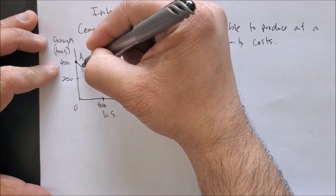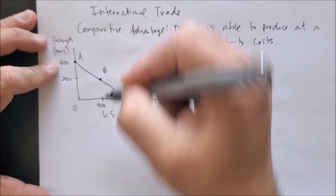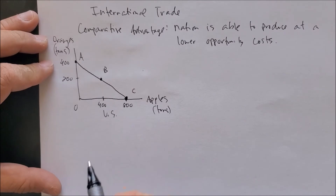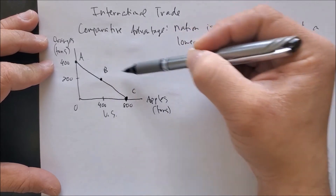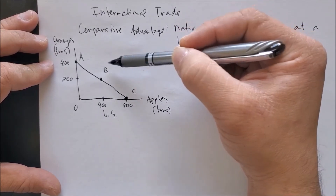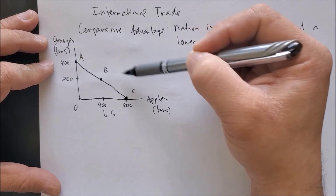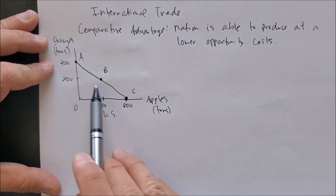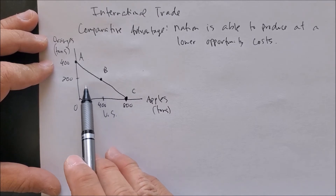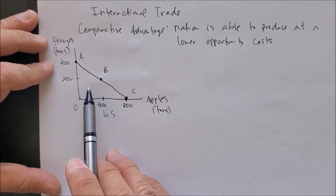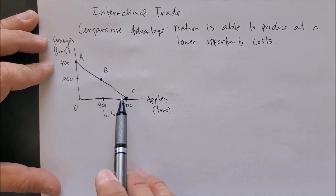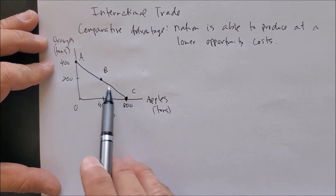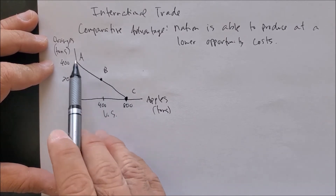Now we can draw what we call a budget constraint for the United States. The U.S. would like to produce beyond this curve, but that would be impossible without additional resources. Producing within the curve would be inefficient, so the efficient options are point A, point B, point C, or anywhere along the constraint.